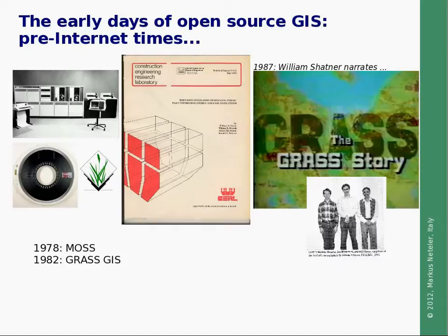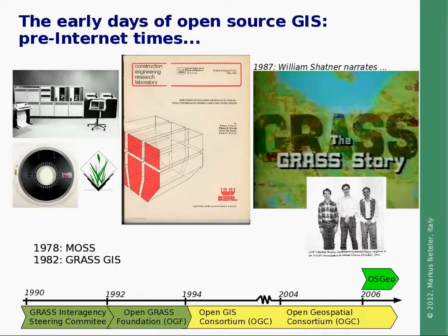Interestingly, if you look at the OpenGeospatial Consortium history, you can see that it derived from the GRASS Interagency Steering Committee, which turned then into the OpenGRASS Foundation. In 2006 the OSGEO, the Open Source Geospatial Foundation, was founded in order to have an umbrella foundation for the various open source GIS projects out there.